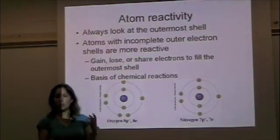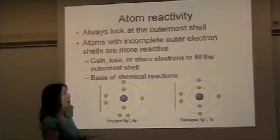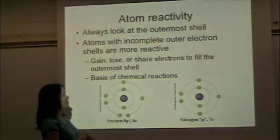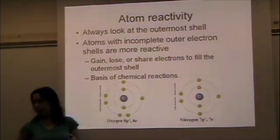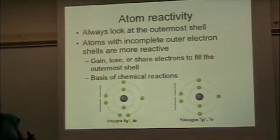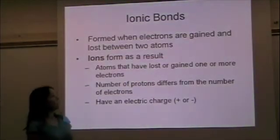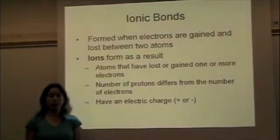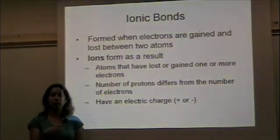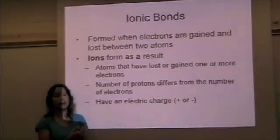Sometimes they'll share electrons, or they'll gain or lose electrons. This is the basis of chemical reactions. An ionic bond is a type of bond that's formed when atoms either gain electrons or lose electrons to fill that outermost shell.